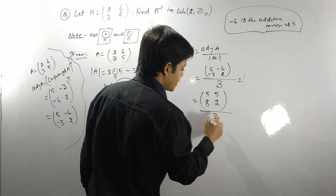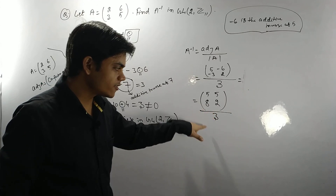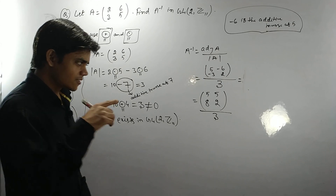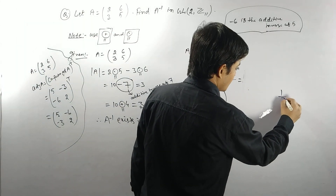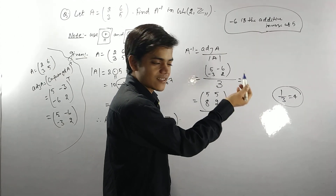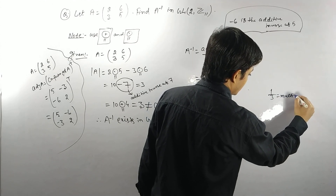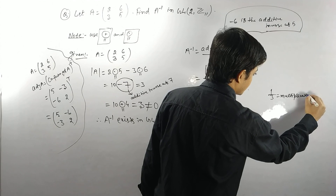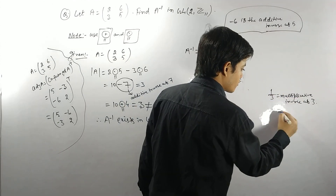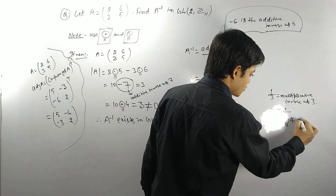Now this is division by 3, but we cannot do ordinary division — we need the multiplicative inverse of 3 in Z₁₁. The multiplicative inverse of 3 is 4, because 3 ×₁₁ 4 = 12 ≡ 1 (mod 11). So 1/3 means 4 in this context.